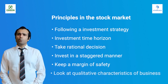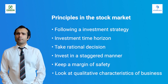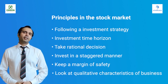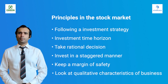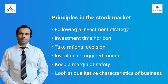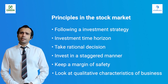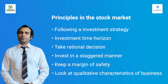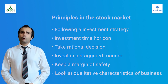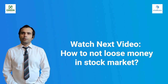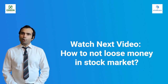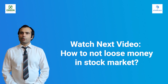Culprit number six is only looking at quantitative characteristics of a business. When investing, you should also look at qualitative characteristics. Current performance must be sustainable in the future. For example, if you invest in a dividend-yielding share and only look at dividend yield without assessing the sustainability of future cash flows, those dividends may not materialize. In the next video, we will discuss how not to lose money from stock markets, with real-life case studies.